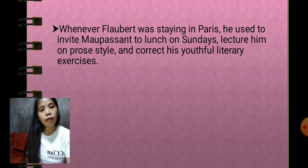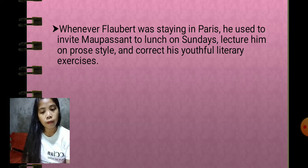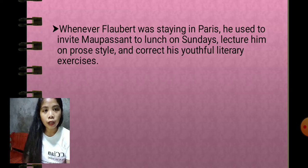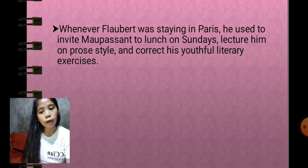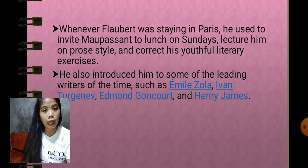Whenever Flaubert was staying in Paris, he would regularly invite Maupassant to Sunday lunches, lecturing him about prose style and correcting his literary exercises. Flaubert also introduced Maupassant to some of the leading writers of the time, such as Émile Zola, Ivan Turgenev, Edmond de Goncourt, and Henry James.